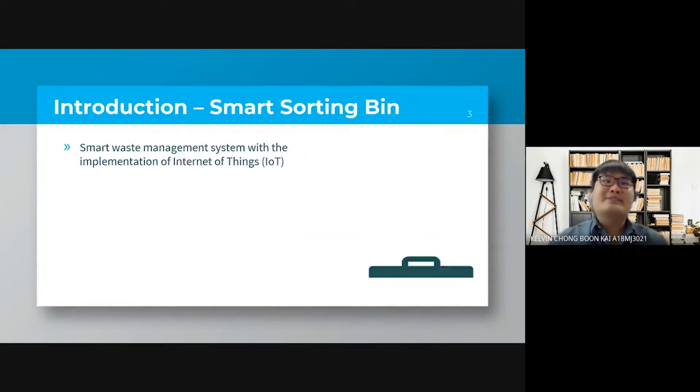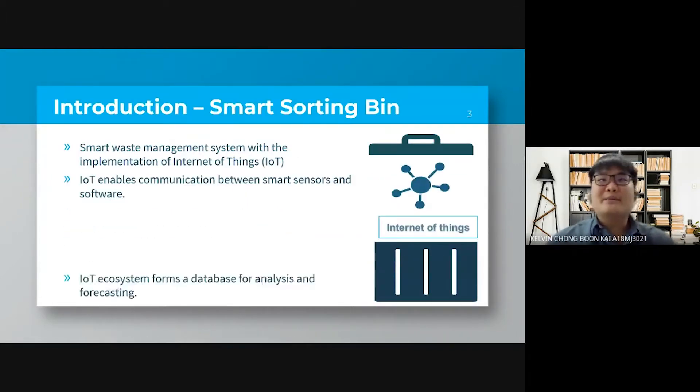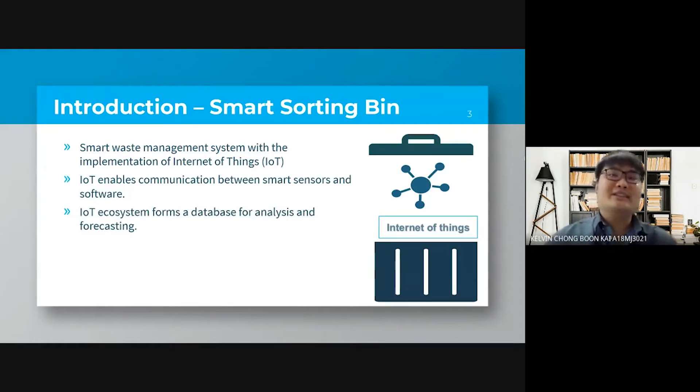Smart Sorting Bins is the concept of smart waste management system with the implementation of IoT, the Internet of Things, which enables communication directly with smart sensors and software. The wide usage of Smart Sorting Bins creates an IoT ecosystem where data is collected to form a database for future analysis and forecasting.